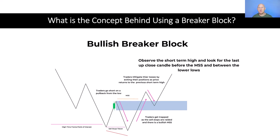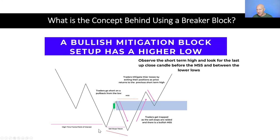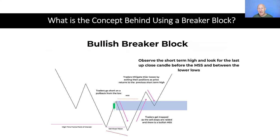Again, this is very similar to the mitigation block setup. But in a mitigation block setup, this would be the lower low — so we create that initial low and when the market pulls back, it would make a higher low rather than a lower low. Going back to our bullish breaker example, the reason why this particular setup works is we have our last up close candle in the swing high between the two lower lows, and prior to the bullish market structure shift.